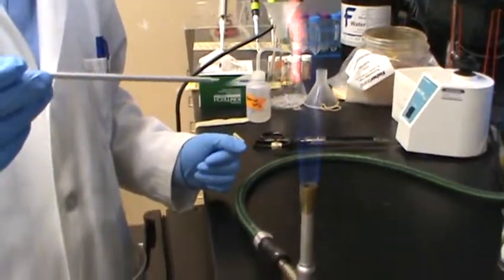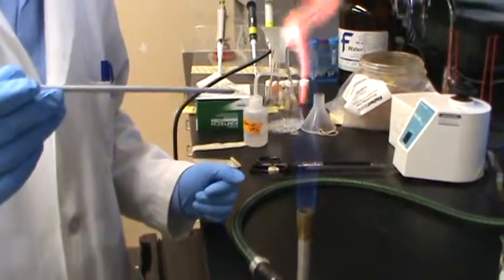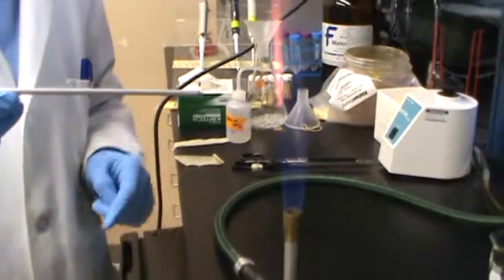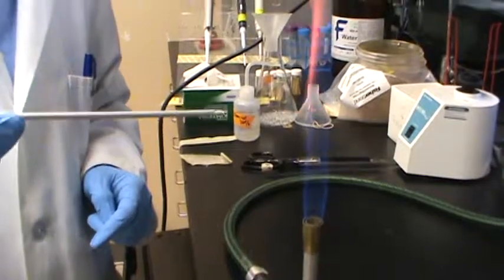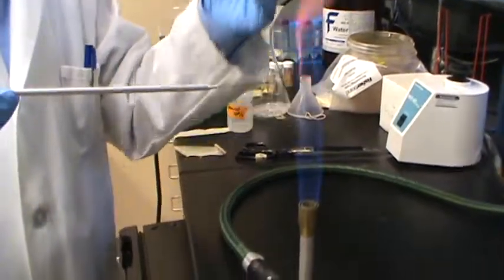Sterilize the loop. Make sure the tip of the loop is burnt red, and we should use the top part of the slant.